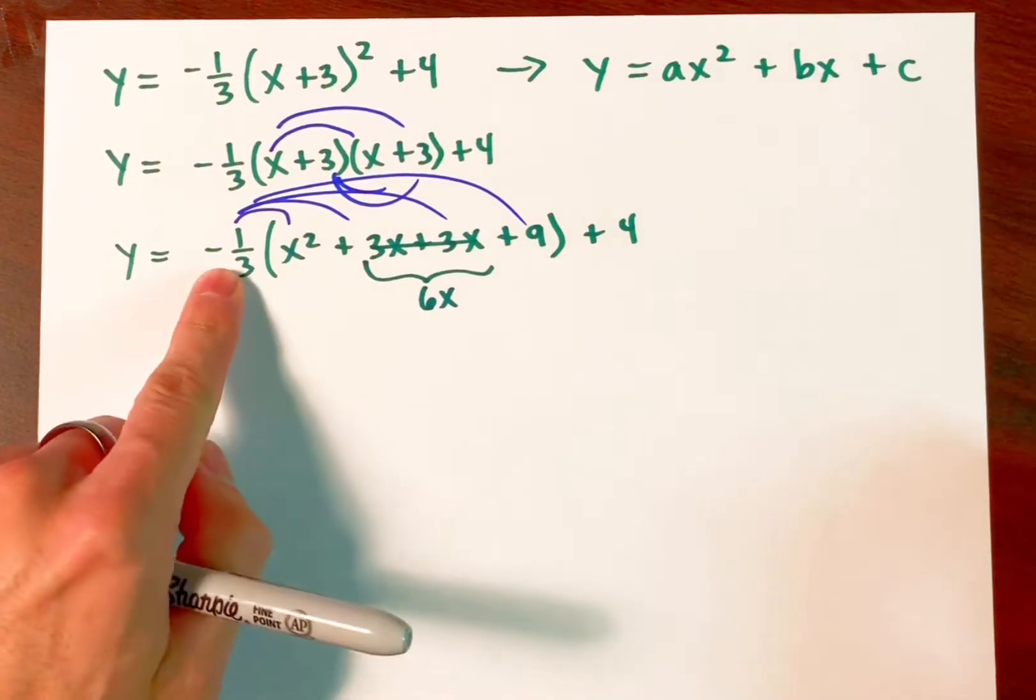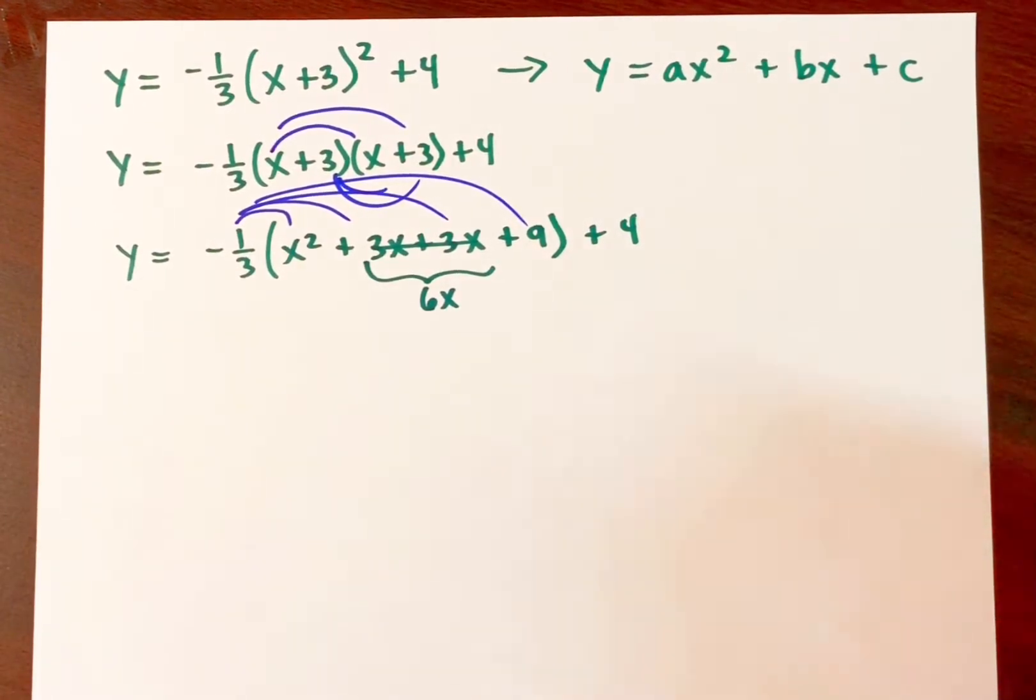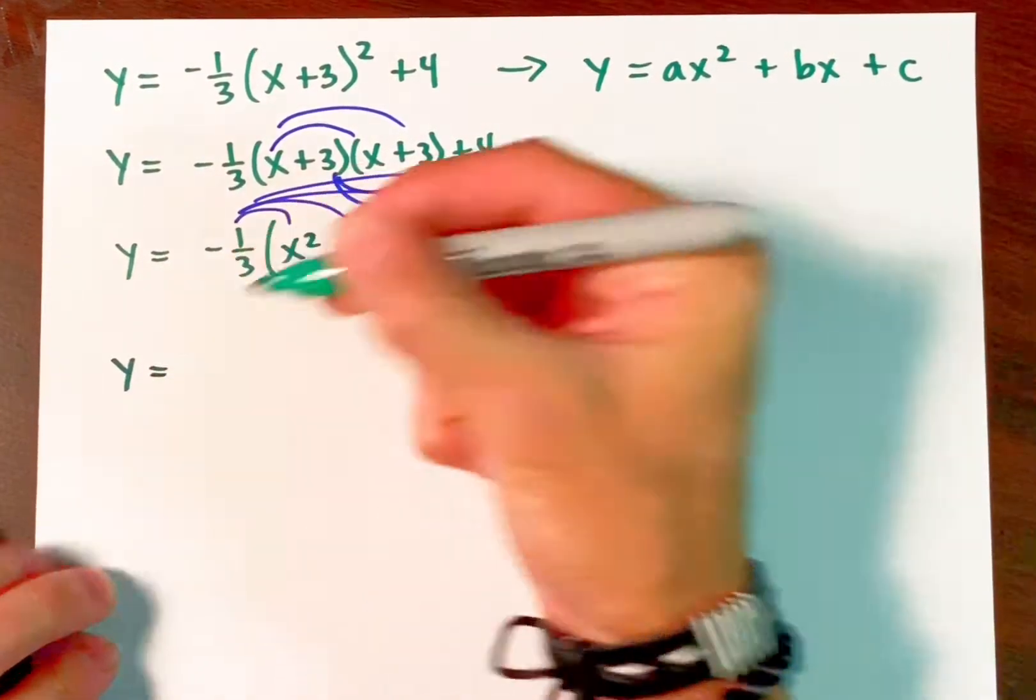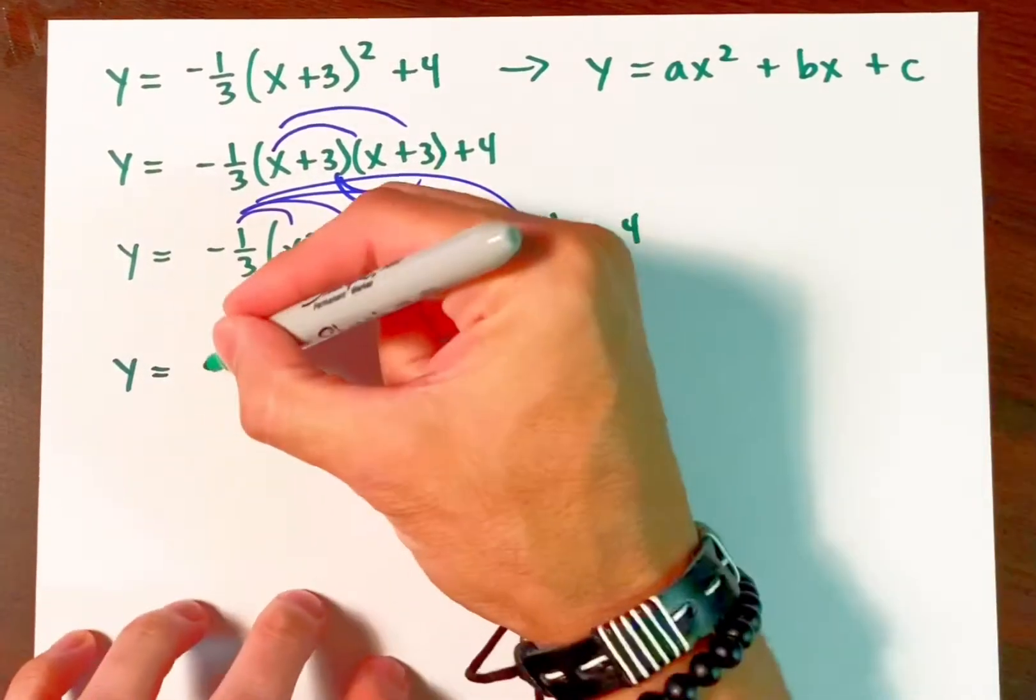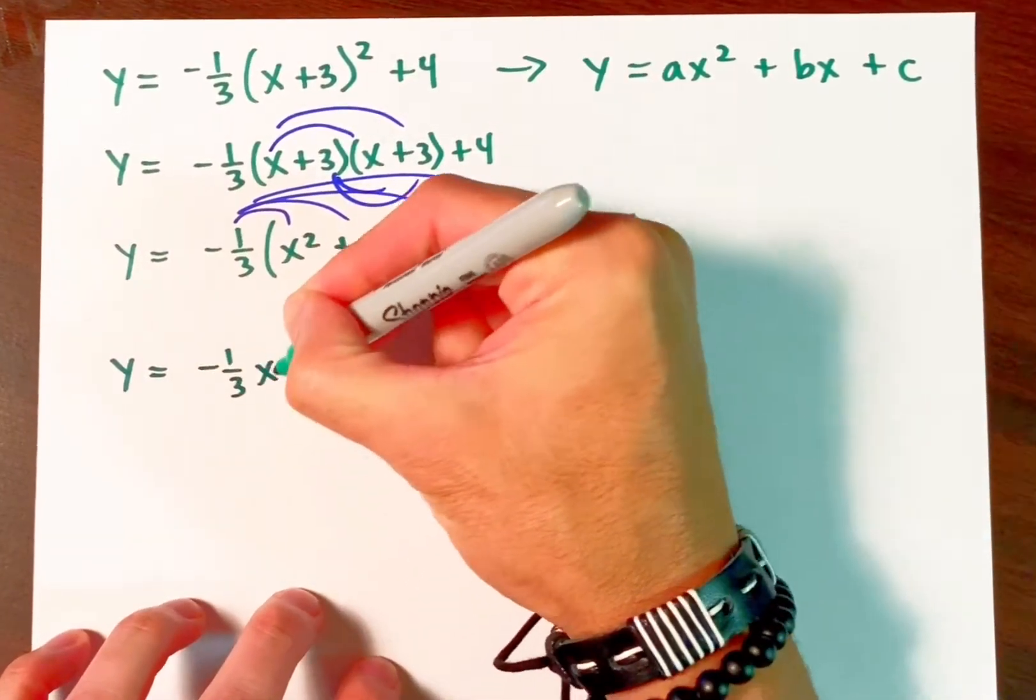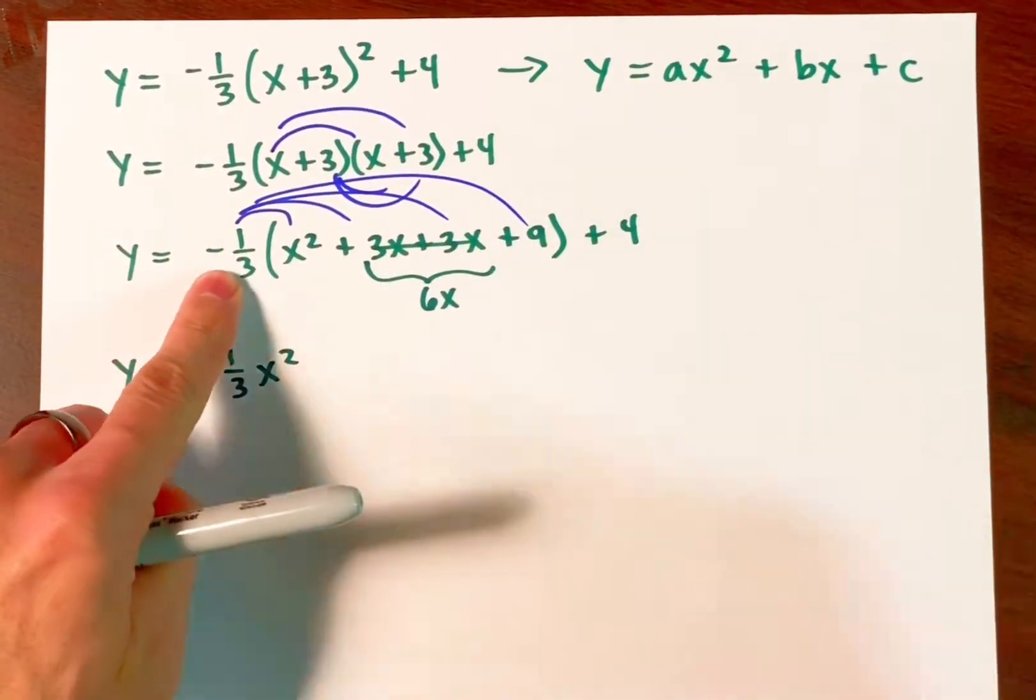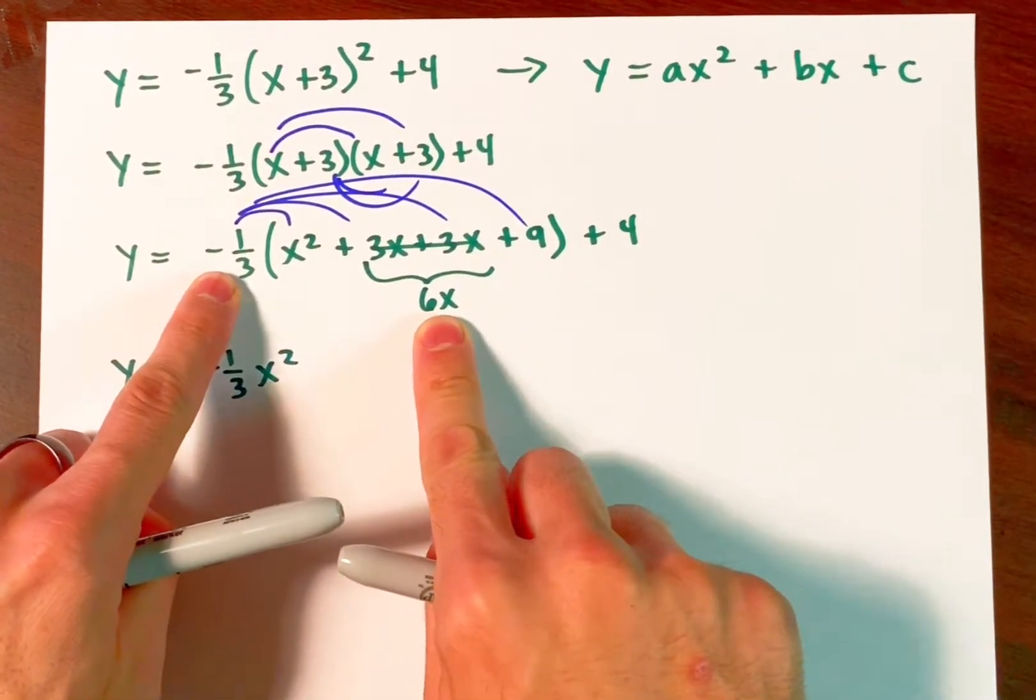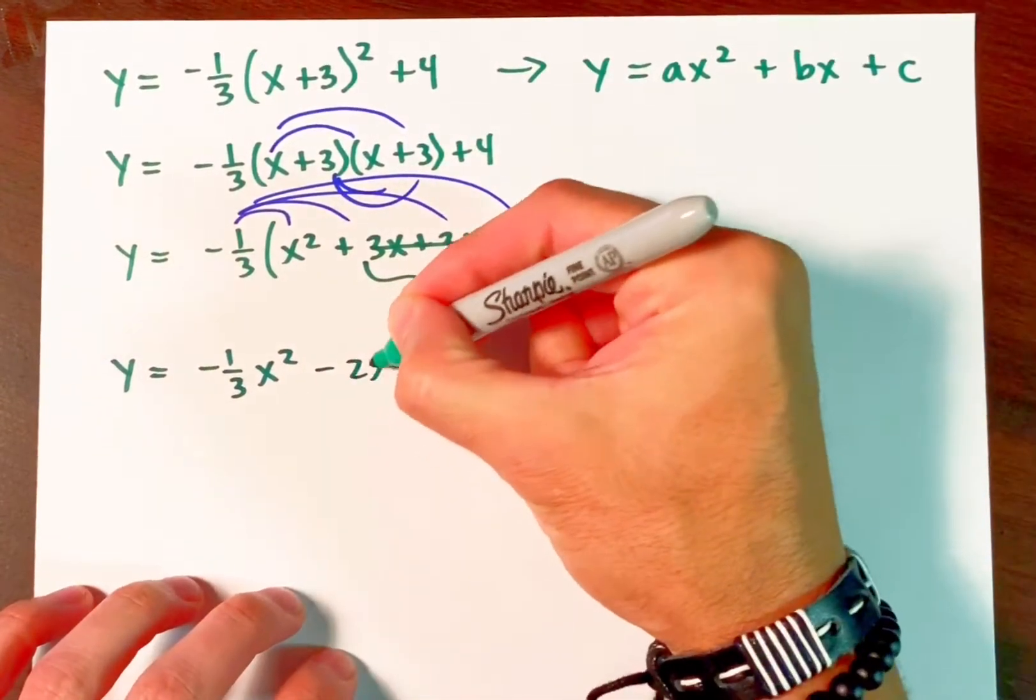Now let's distribute the negative one third. So we have that times that is a negative third x squared. A negative third times 6x yields negative 2x.